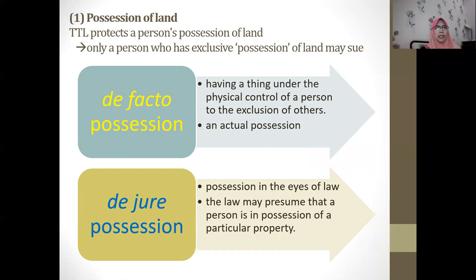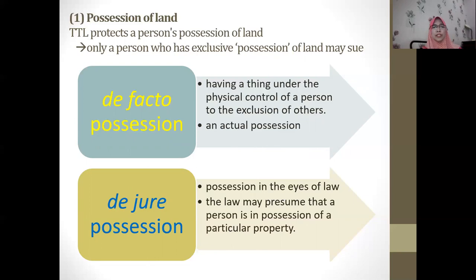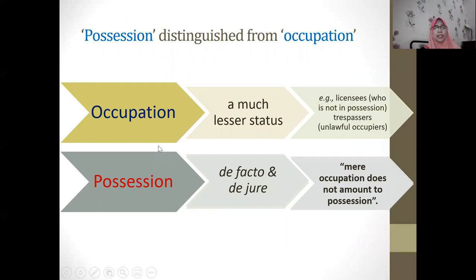The claimant must prove exclusive possession to have the right to sue. There are two types of possession: de facto possession — actual physical control of the property allowing exclusion of others; and de jure possession — possession in the eyes of the law, where the law presumes a person is in possession even if they do not physically control the land. Both types satisfy the first element.